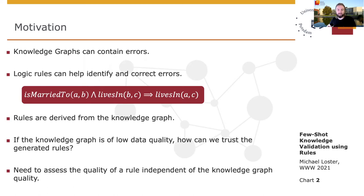However, a closer look at the rule generation process reveals the following problem. If the knowledge graph is of low data quality, how can we have confidence in the correctness of the generated rules? Based on this question, the need arises to evaluate the data quality of a rule independently of the quality of the underlying knowledge graph.